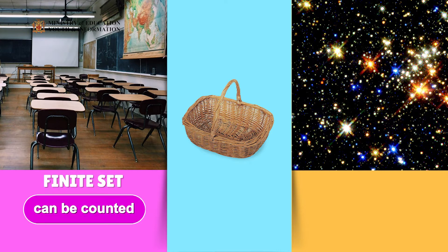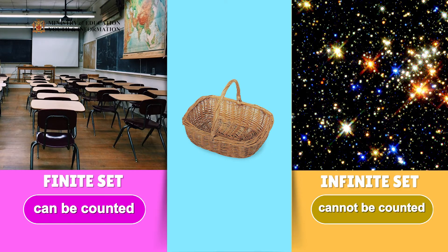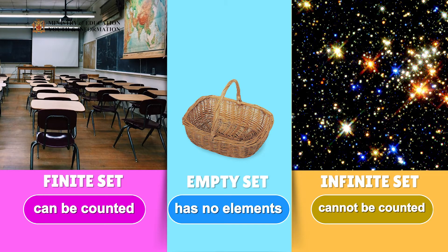Now let us put all three sets of pictures together. The set of desks and chairs can all be counted, thus it is called a finite set. The set of stars cannot all be counted, therefore it is called an infinite set. And the set that has no elements in it is called an empty or null set. Excellent job so far — now let us explore a bit further.